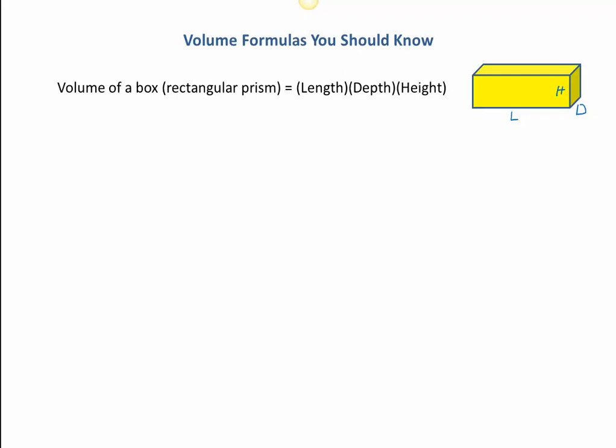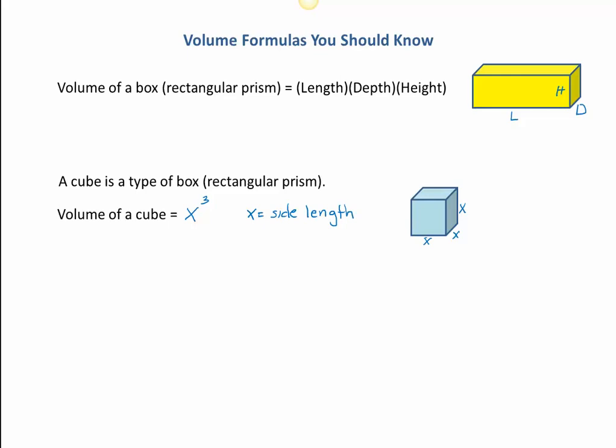When we talk about a cube, a cube is just a special type of rectangular prism. We need to multiply all three dimensions together. The special thing about a cube is that all three dimensions are exactly the same. So the formula looks a little bit different. The volume of a cube is x times x times x, which we know is x cubed, and x represents the side length. The appearance of the formula has changed, but the idea hasn't. If it's a box, we multiply all three dimensions together.